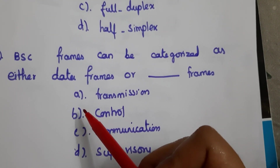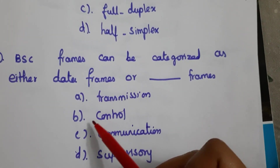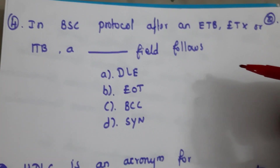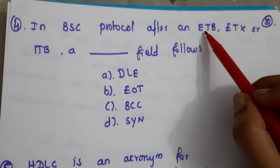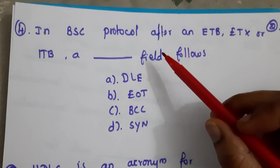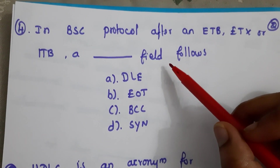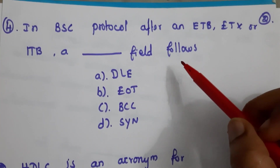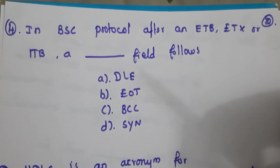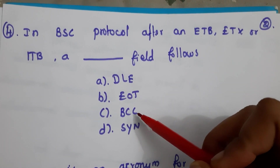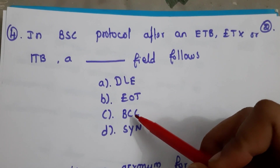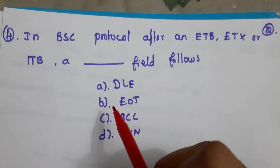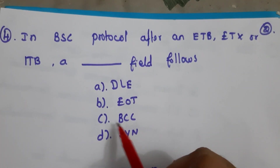The frame types in BSC are data frame and control frame, so the answer is B. Next question: in BSC protocol, after ETX or ETB, which field follows? The error-checking field BCC — Block Check Count — is included after ETX or ETB. The answer here is C.